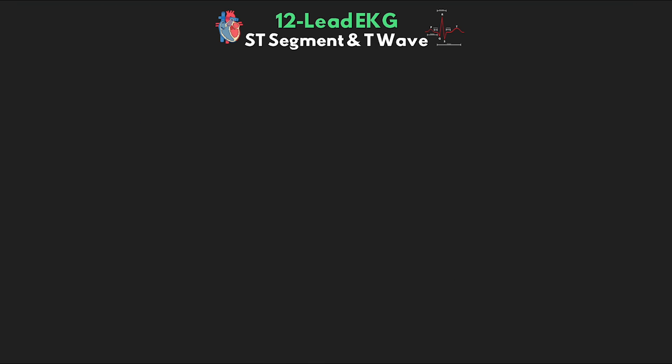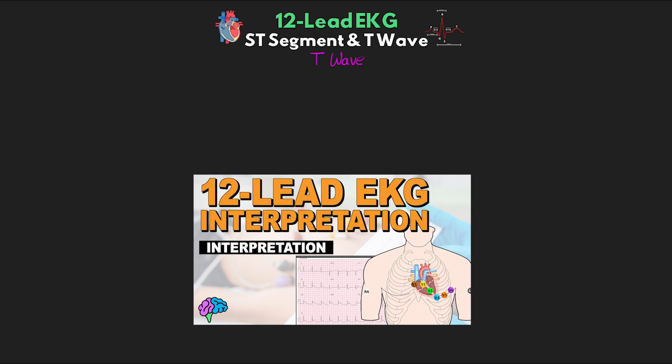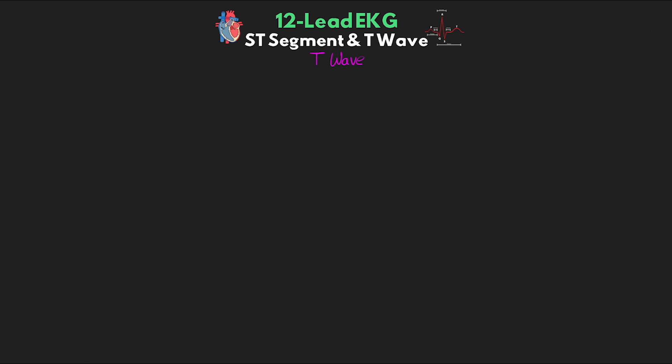Now that we've talked about the ST segment, we also need to discuss the T wave. We've already previously covered this in prior lessons, but I want to hit on a few points that are going to be important as we move into talking about ischemia and infarction. There are various morphologies, but we can really group them down into three basic things: the shape or symmetry, the size, and the polarity of the T wave.